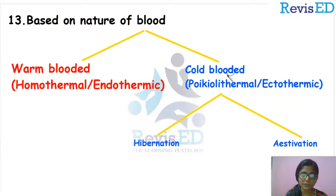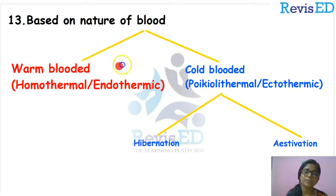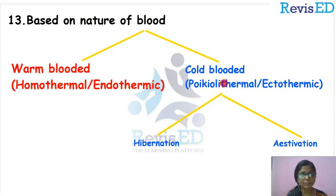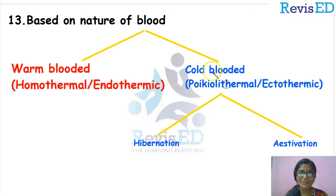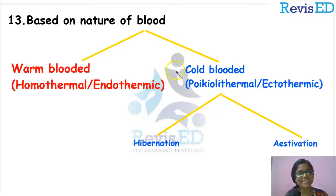So, based on the nature of blood, we can classify animals into warm-blooded and cold-blooded. I hope it is clear for you. Thank you for watching. Be revised and stay safe.